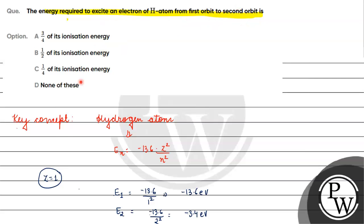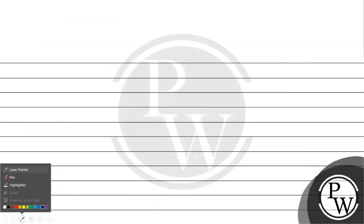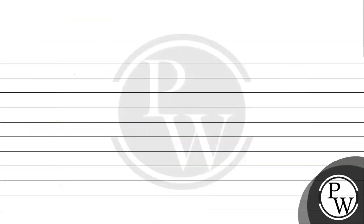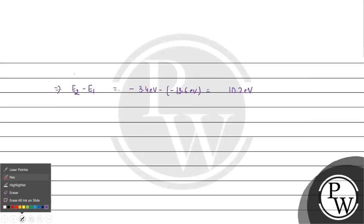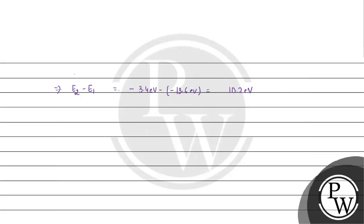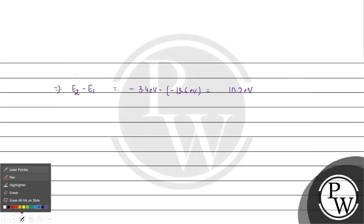If excitation of the electron happens, then the energy required will be E2 minus E1. E2 is minus 3.4 electron volt, minus of minus 13.6 electron volt. This gives us 10.2 electron volt — this is the excitation energy from first orbit to second orbit.